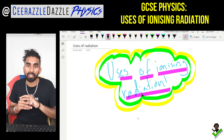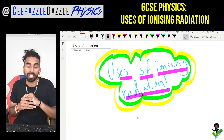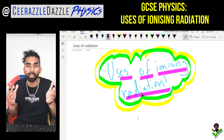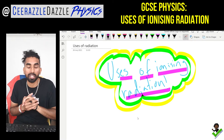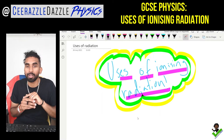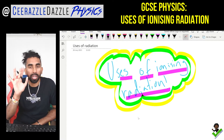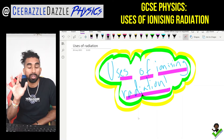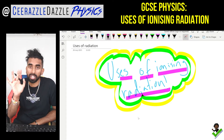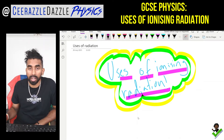Welcome to another session of physics. In today's session we'll be talking about the uses of ionizing radiation, so put down today's title: 'The Uses of Ionizing Radiation.' Before we move on, make sure you've watched the previous videos on alpha, beta, and gamma radiation, because you need to know the properties of them before moving on to this one.